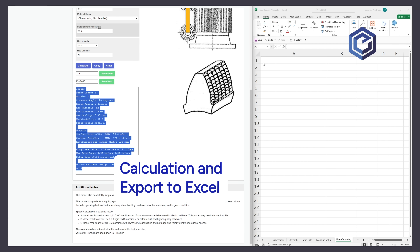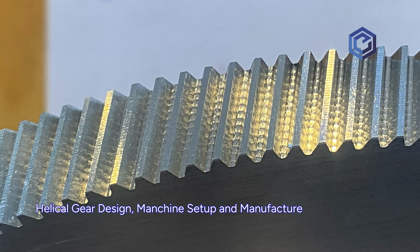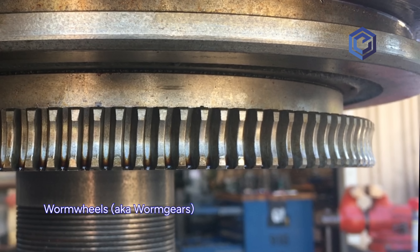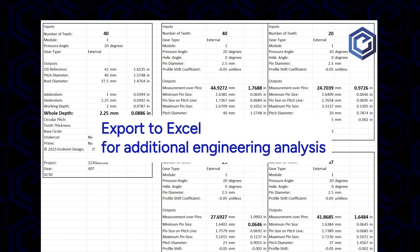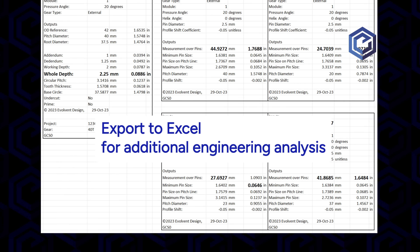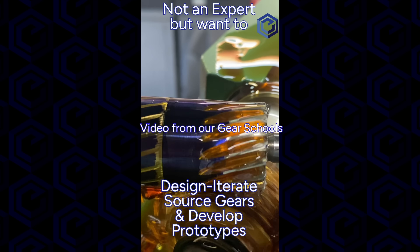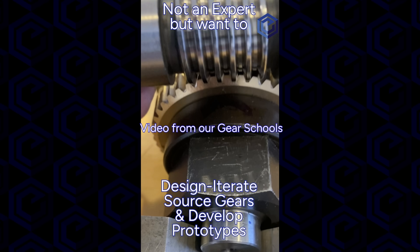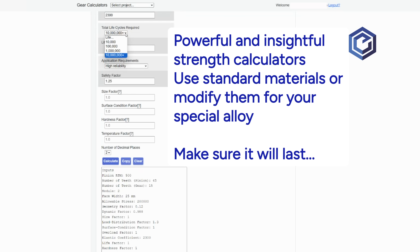Gear Calculators covers a wide range of gear types, including internal and external spur gears, helical gears, worms and worm gears, and gear racks. We also feature some of the more advanced design elements like profile shifts, custom pitches, grinding carbides for making worms on your lathe, and more. Features that would take multiple software packages are all available within GearCalculators.com.